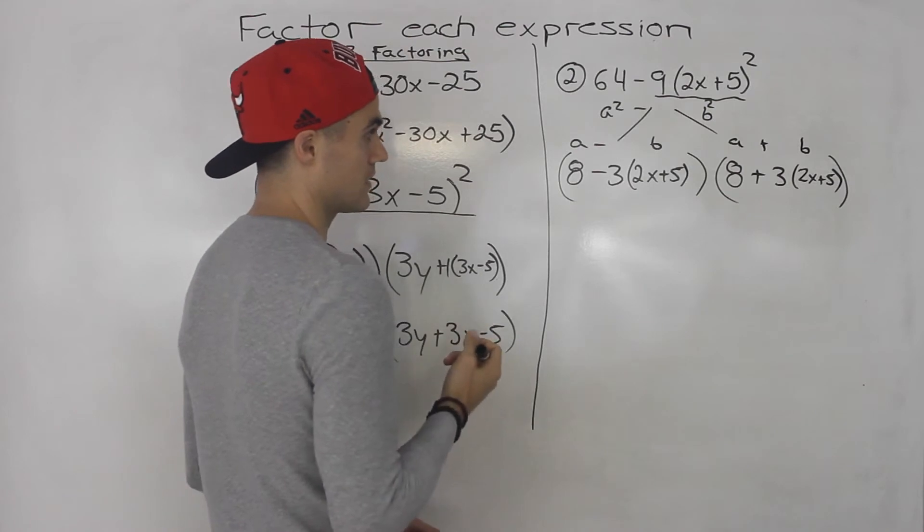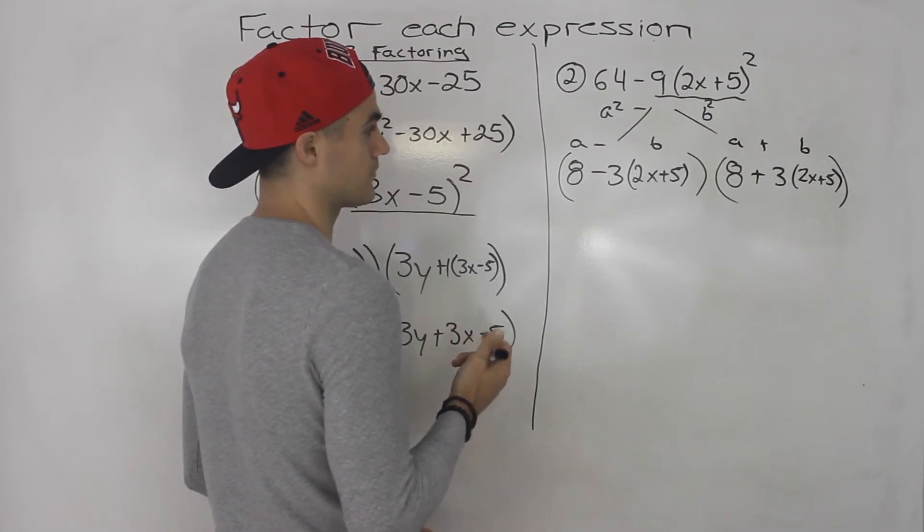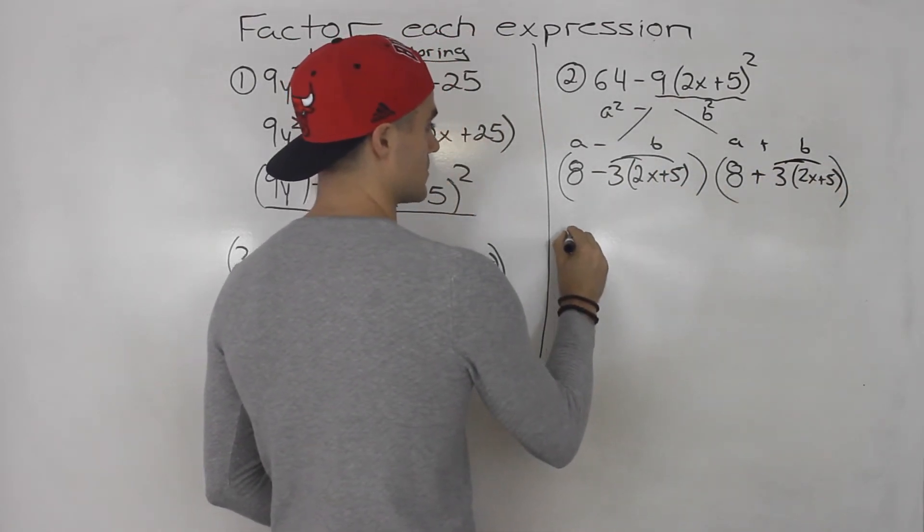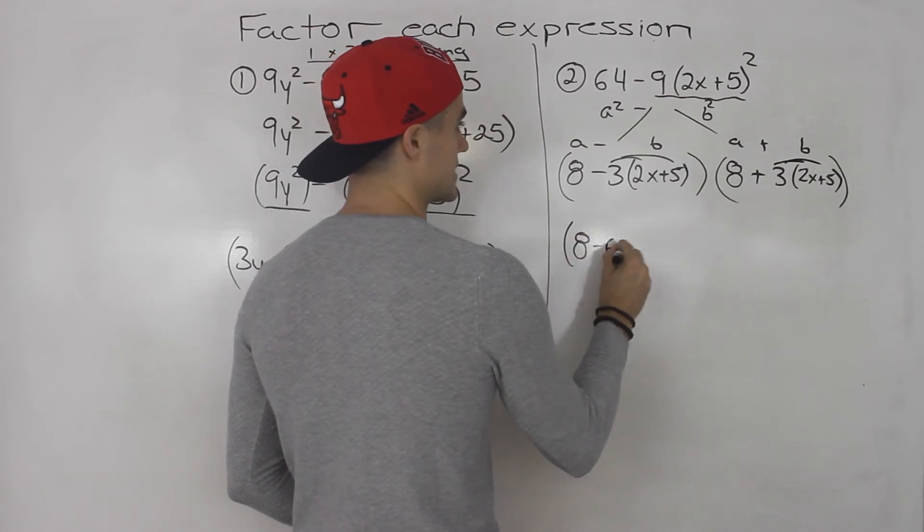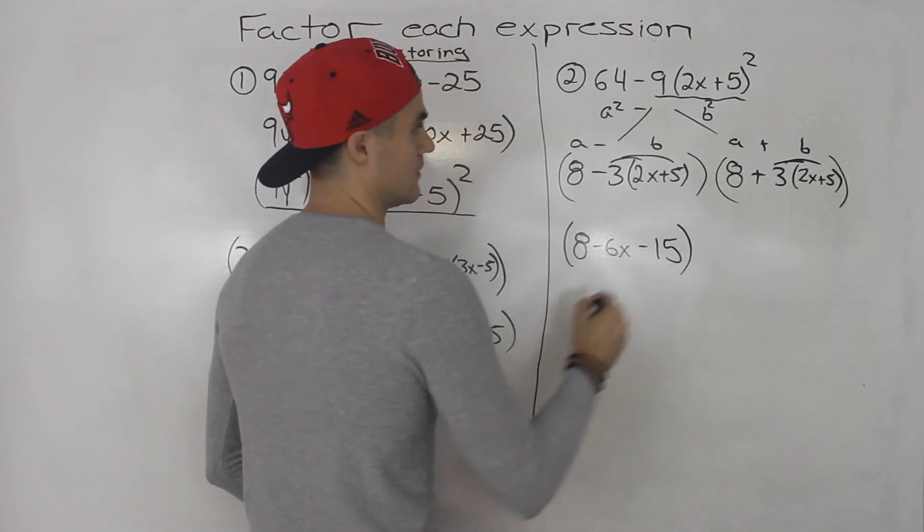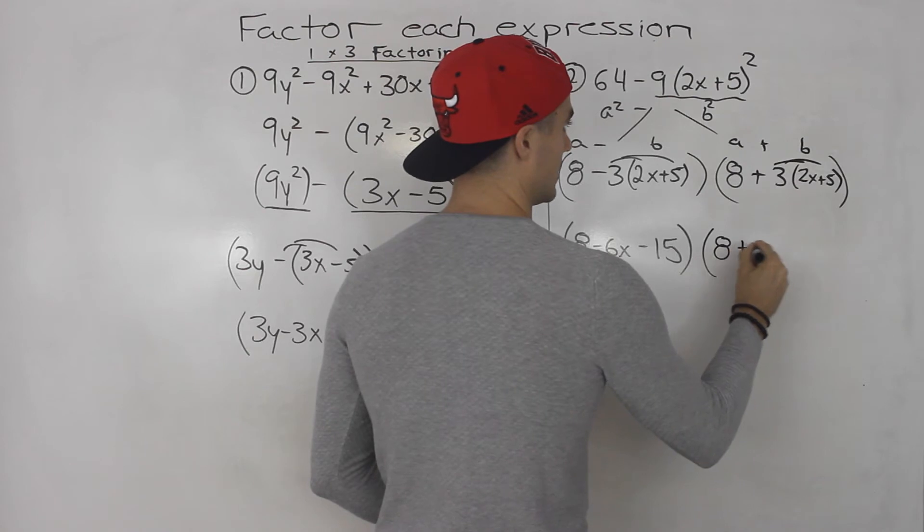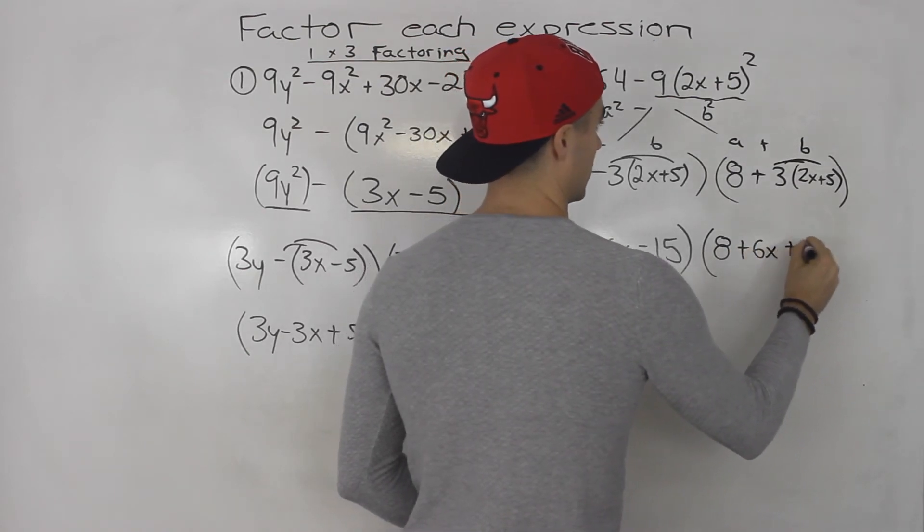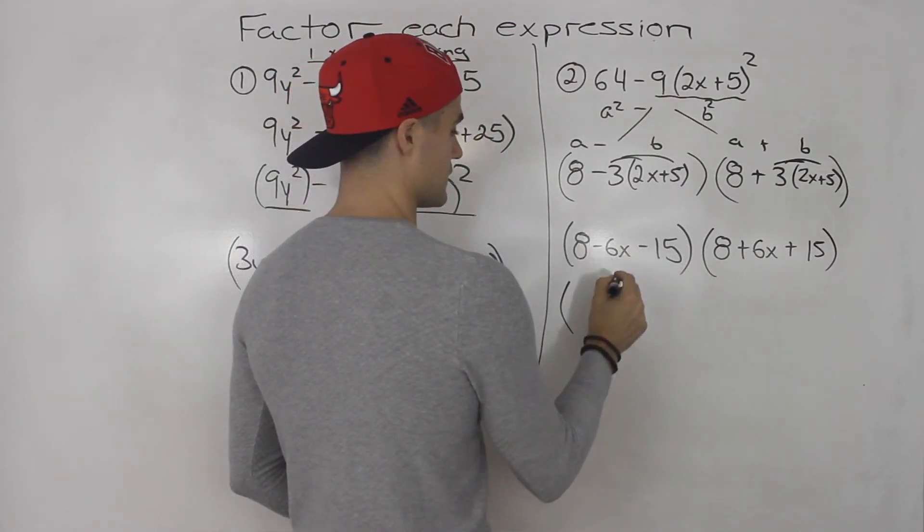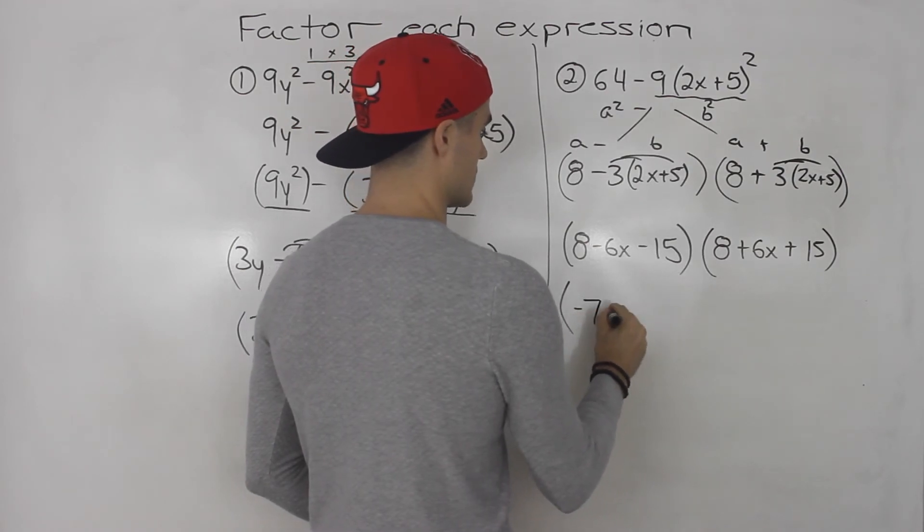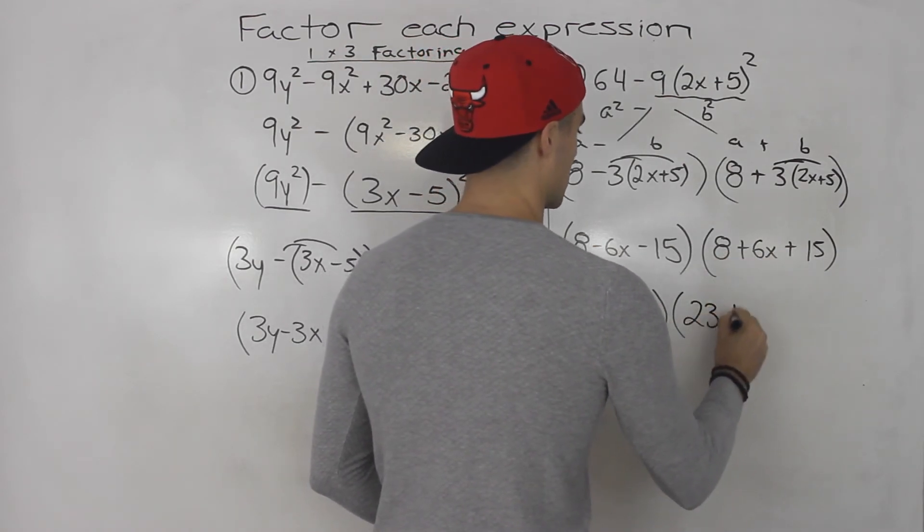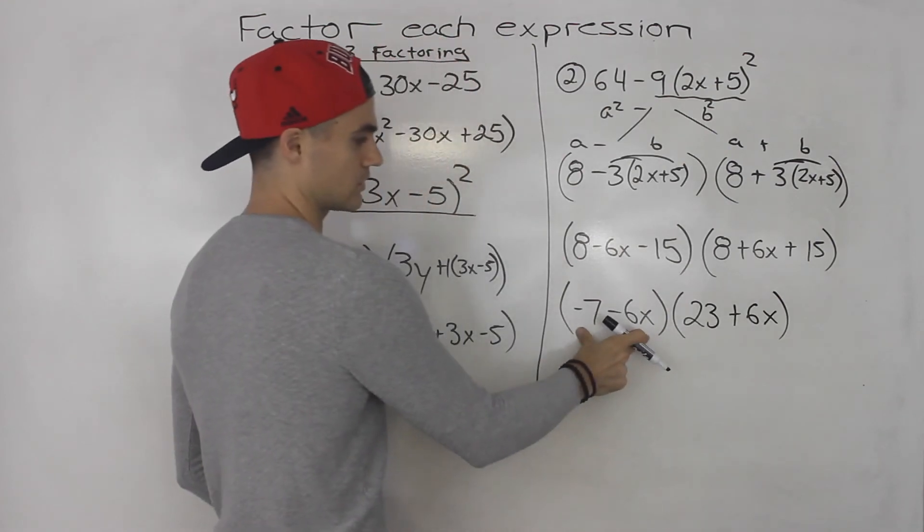And then from here, all we do is pretty much distribute and simplify. So we got to distribute that 3 inside the bracket. So we'd be left with 8 minus 6x minus 15. And then this would be 8 plus 6x plus 15. So this here, 8 minus 15 would give us a negative 7. This would be minus 6x. And this here would be 23 plus 6x.